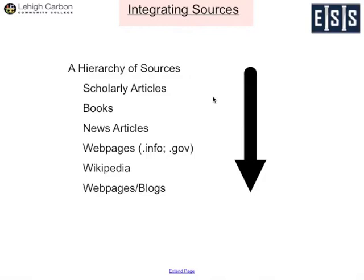Let's start by talking about the different types of sources that you can look at and what their relative value is. This comes from the fact that some of them are more well-researched or subjected to more scrutiny than others. At the very top of this list is scholarly articles — articles that are in an academic journal, a peer-reviewed journal. That just means that other authors and specialists in that field have looked at the article and said, yes, this particular paper and argument is valid or has strong research. That makes it pretty much the strongest type of source you can get.